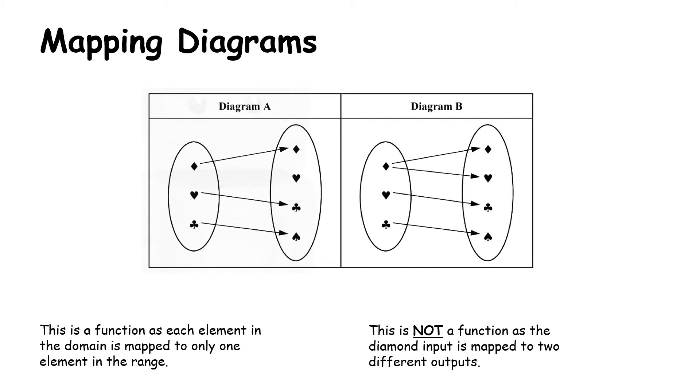The second diagram, diagram B, is not a function. And the reason for it is this: here we have two mappings from one input. This is not a function as the diamond input is mapped to two different outputs. Let's take an example that might make this a bit clearer. If I put the value of three into a formula, I shouldn't sometimes get a one and sometimes get a two. I should only get one specific value. When I sub it in, I should only get one value out. If I don't, then that is not a function. When we're dealing with mapping diagrams, you're looking out that there is only one arrow coming out of each input.